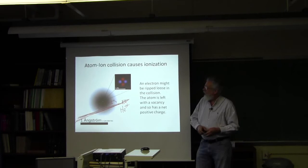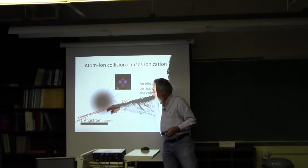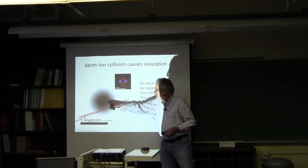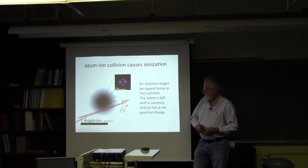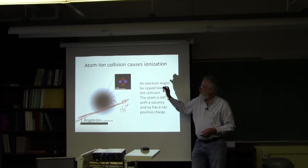So when an ion goes by an atom, what it does, this attracts the electrons and pulls them out. What you end up with is the electrons get removed from the region of the nucleus. It leaves a vacancy. And so you have a net positive charge on this after the electrons have been removed by the atom ion collision.